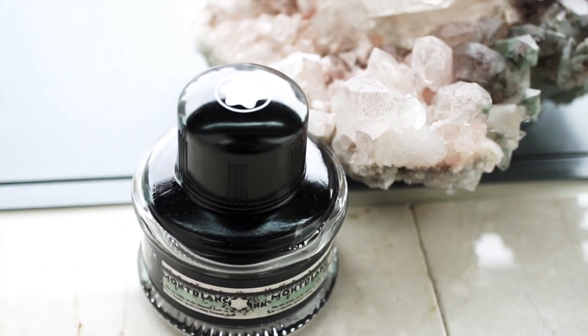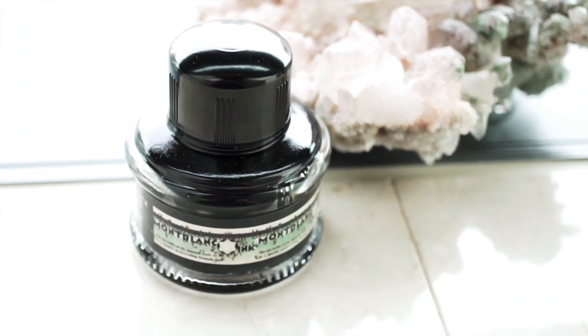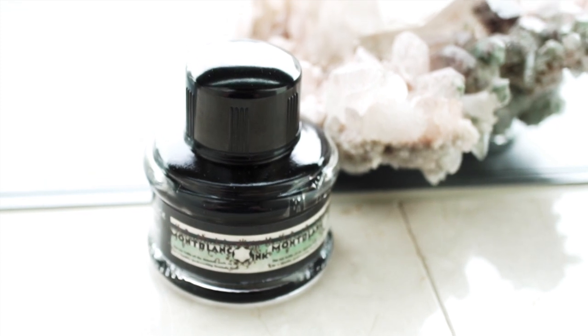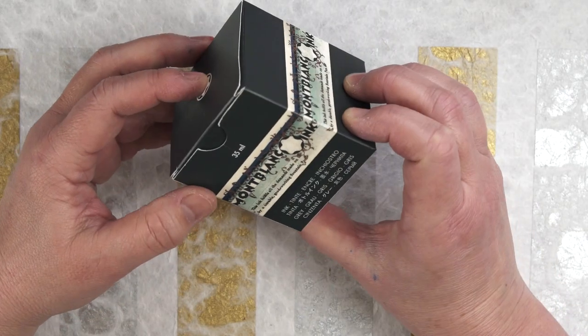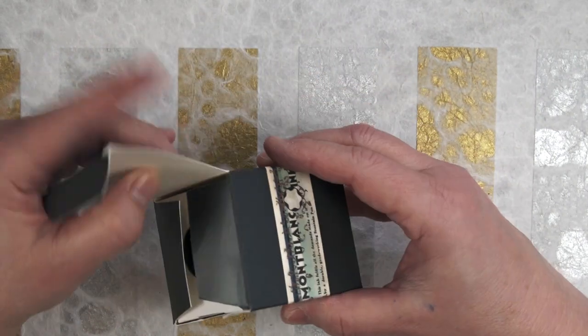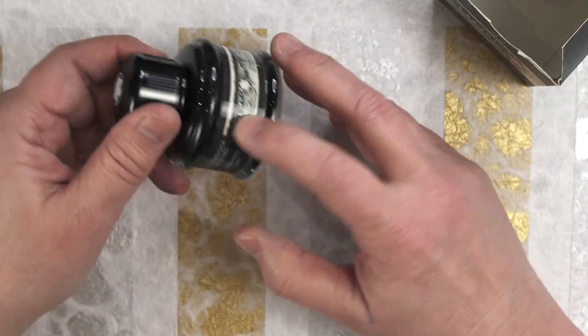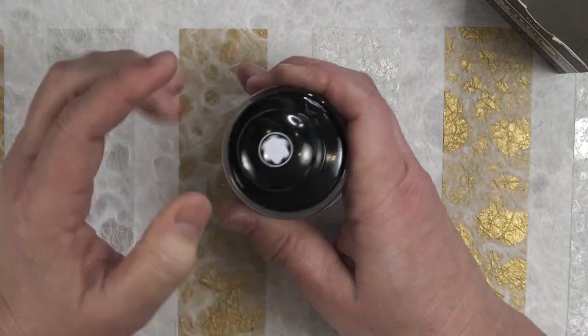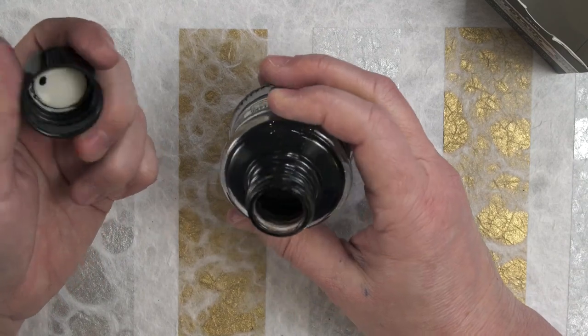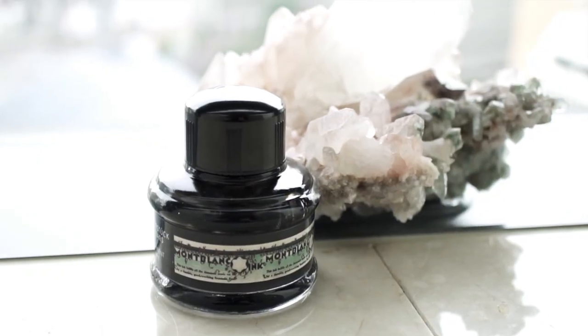I like the square bottles of Mont Blanc special edition inks, but this Meisterstück 90th anniversary bottle is a bit different. Both the box and the label on the bottle have this really old-fashioned kind of look to it. The label has muted colors and both the label and bottle have a kind of 1940s feel. It's a beautiful bottle.